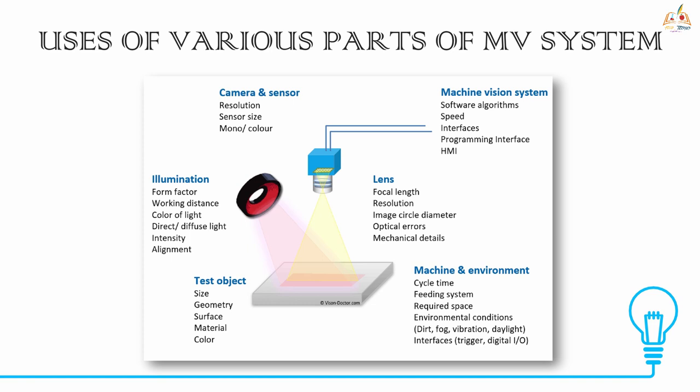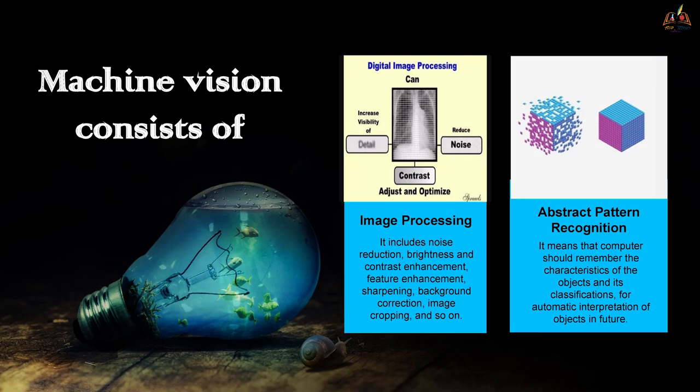Illumination uses include form factor, working distance, color of light, direct or diffuse light, intensity, and alignment. Machine vision consists of image processing and abstract pattern recognition. Image processing includes noise reduction, brightness and contrast enhancement, feature enhancement, background correction, image cropping, and so on. Abstract pattern recognition means the computer remembers the characteristics of objects in classifications for automatic interpretation of objects in the future.